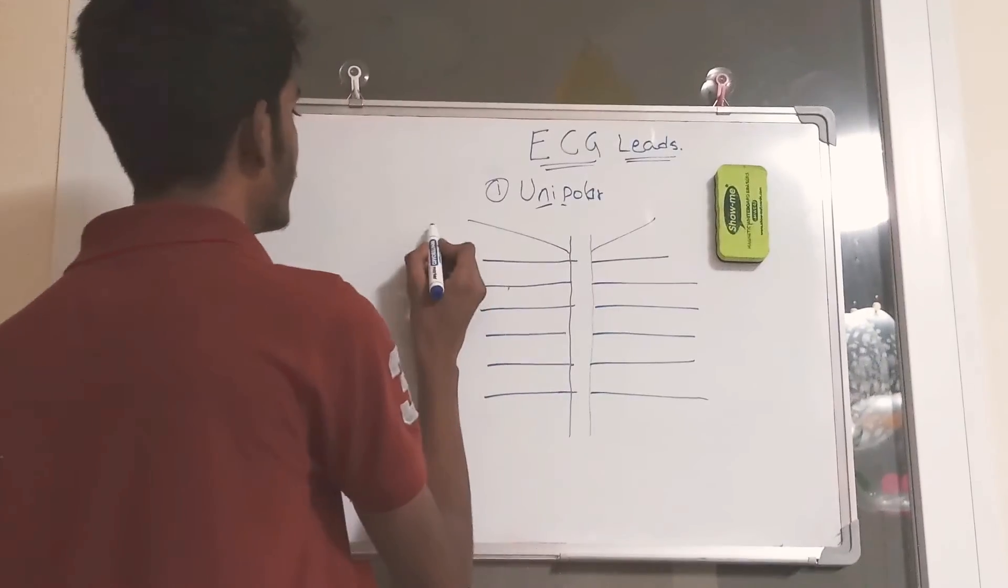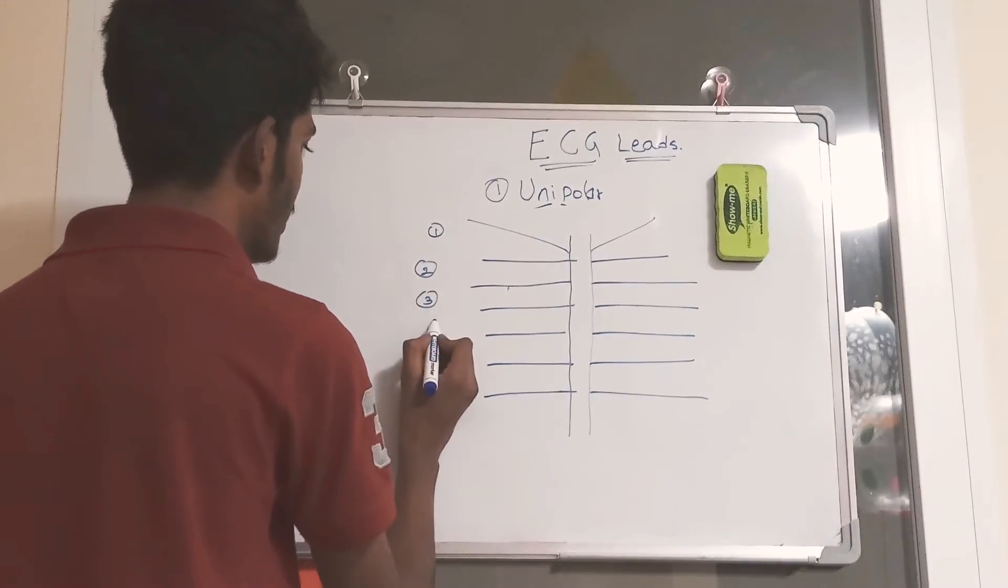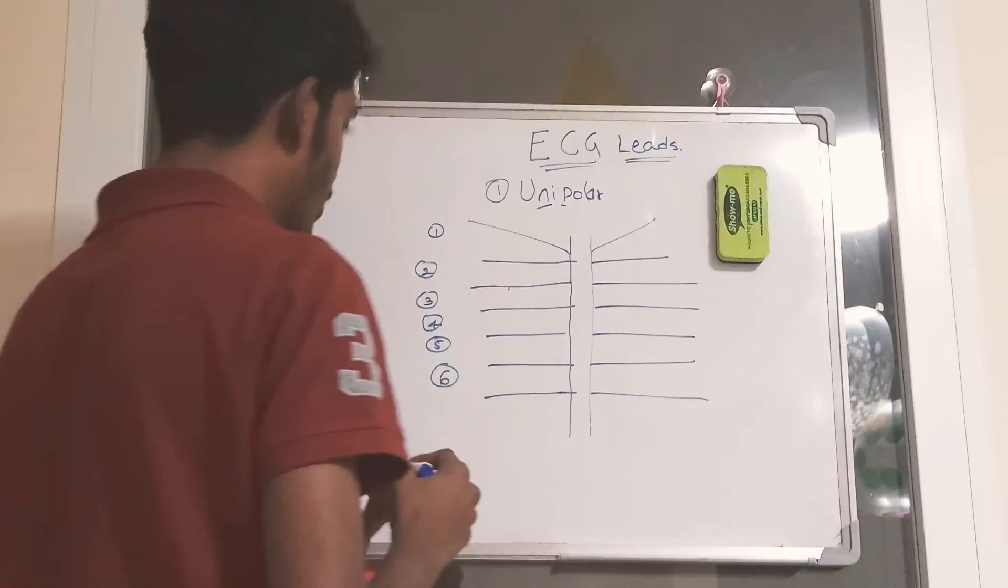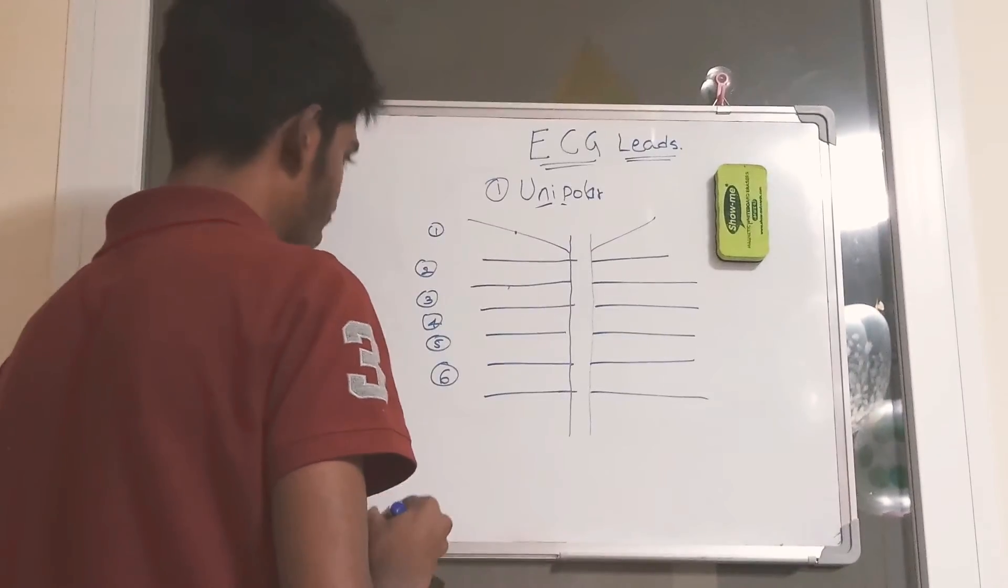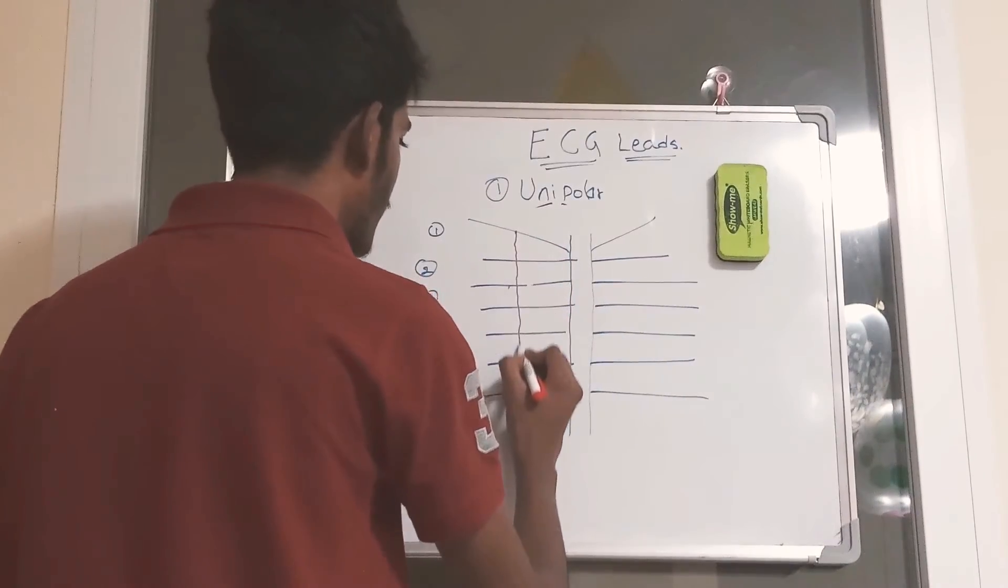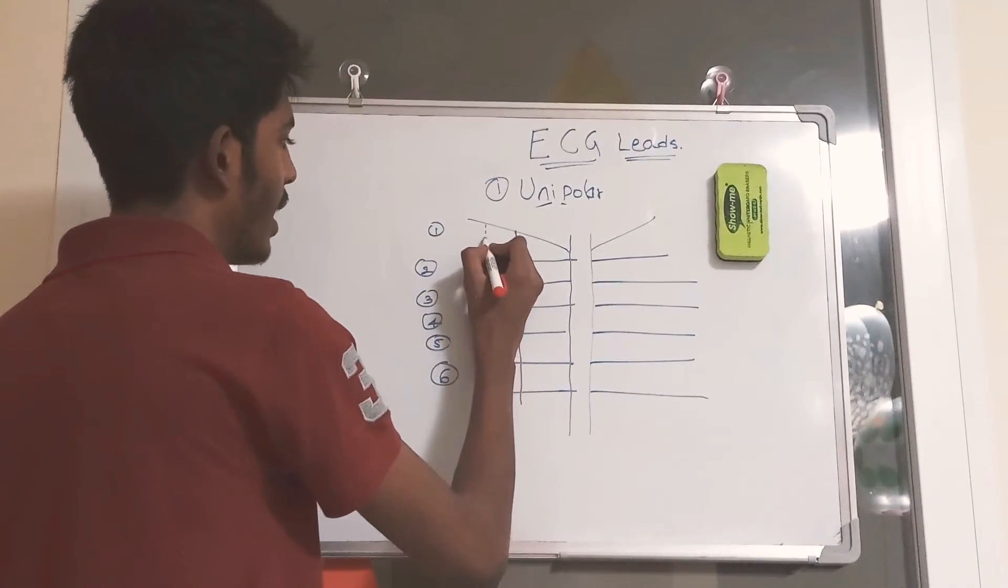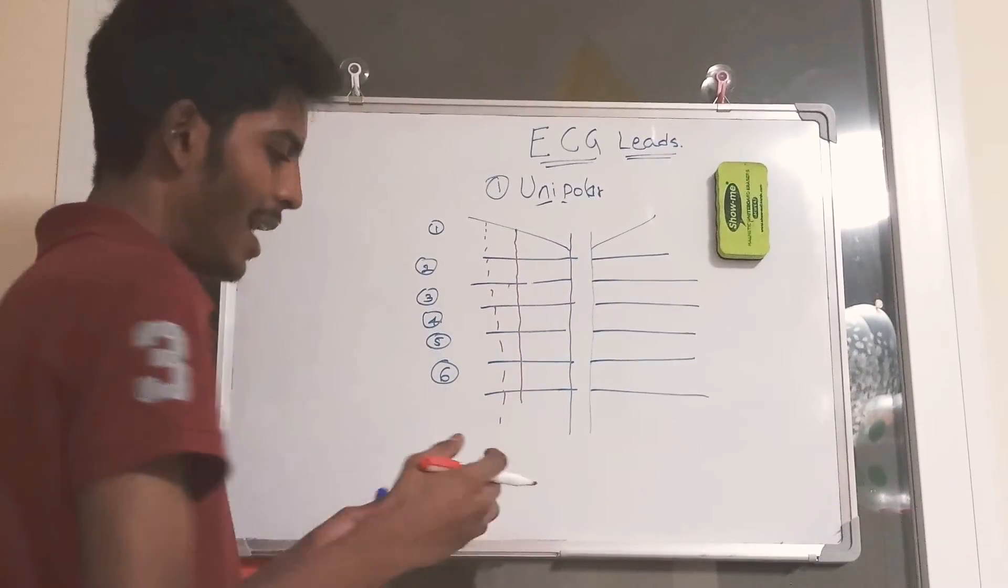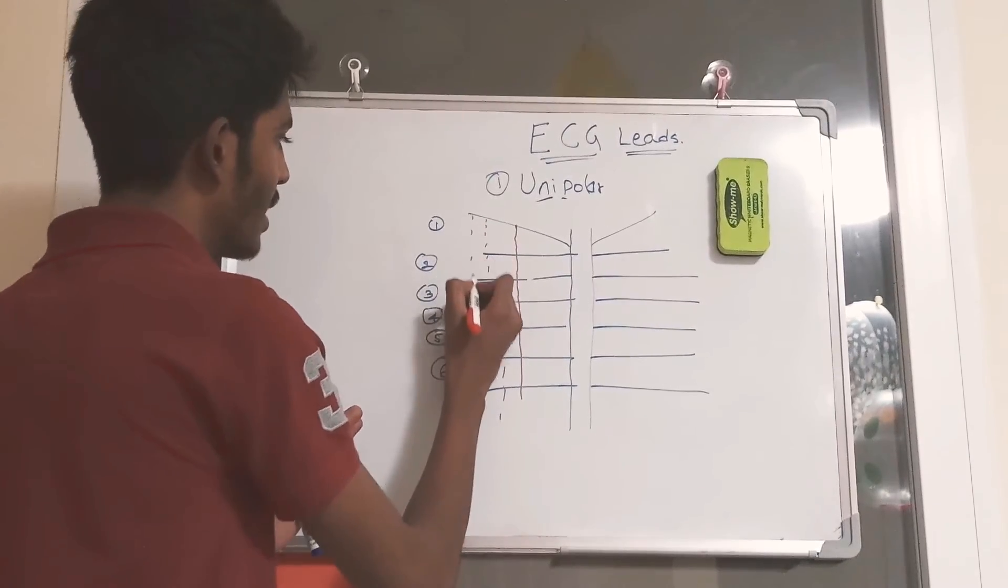This is first intercostal space, second intercostal space, third, fourth, fifth, and sixth intercostal space. Before that, we have to know three lines in our body. This is mid-clavicular line, the other line is anterior axillary line, and as our body goes, this one curves and gives mid-axillary line.